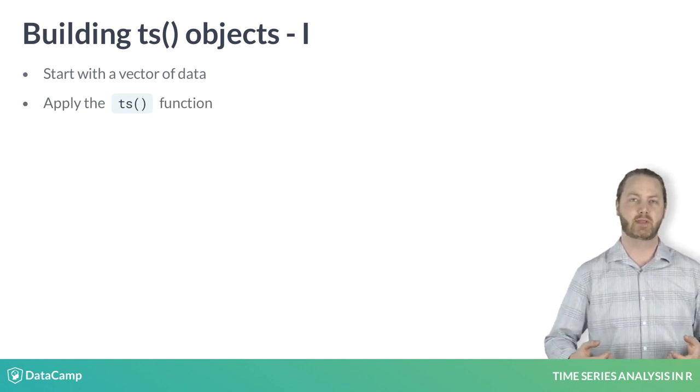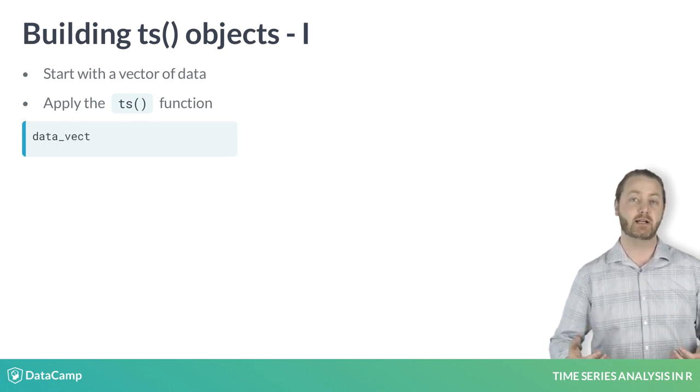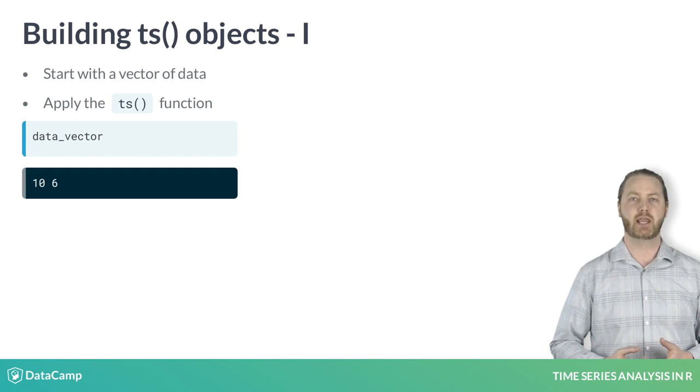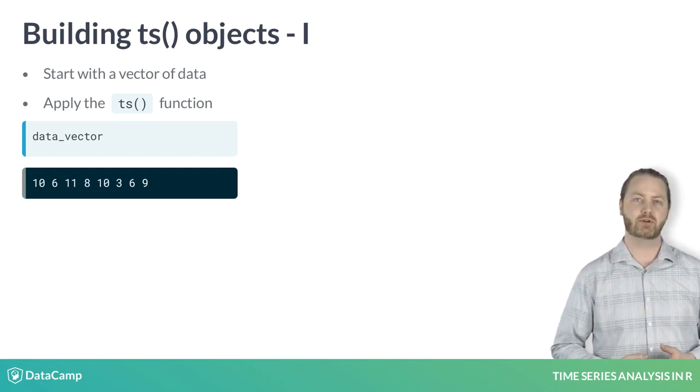Such objects are of the ts class. They represent data that is at least approximately evenly spaced over time. Consider the following data vector, which has just eight observations. To make this vector a time series object, you apply the ts function.